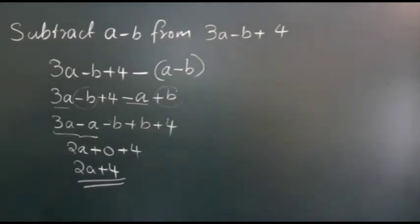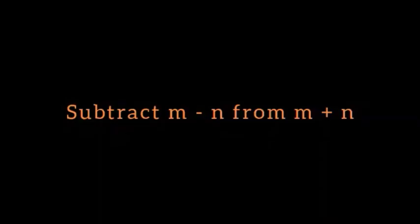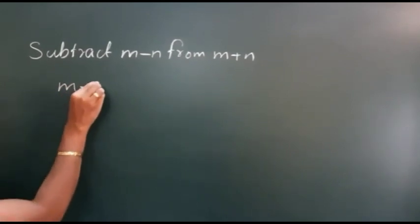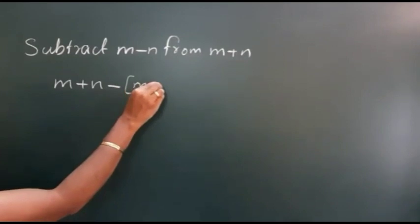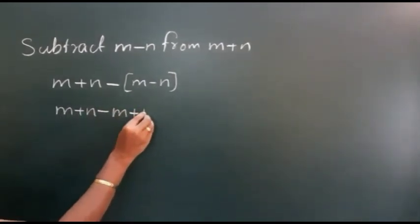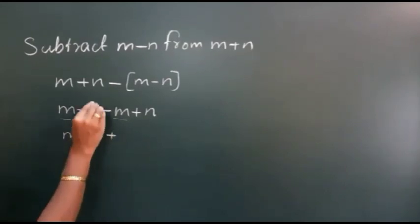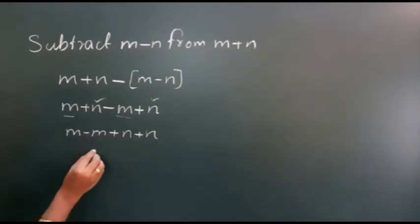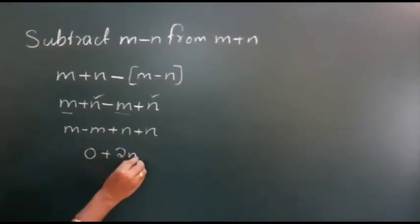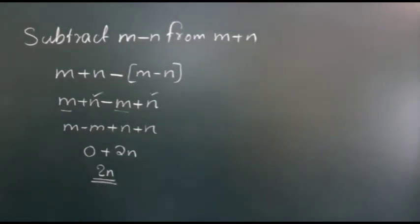For subtraction of algebraic expressions, we take the additive inverse of each term of the second expression. Next example: subtract m minus n from m plus n. We write m plus n minus, then put m minus n in brackets. Change the signs: minus m and minus n becomes plus n. Take like terms: m minus m equals 0, and n plus n equals 2n. So 0 plus 2n equals 2n. The answer is 2n.